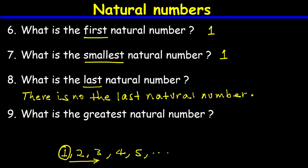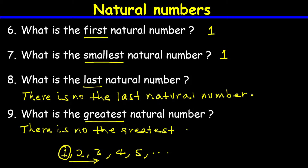Question number nine: what is the greatest natural number? Again, because natural numbers are infinite, there is no last natural number. Therefore the answer is that there is no greatest natural number.